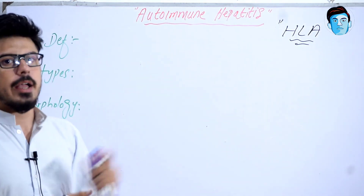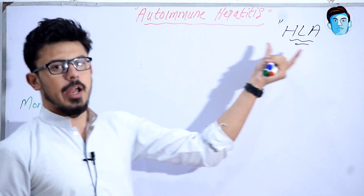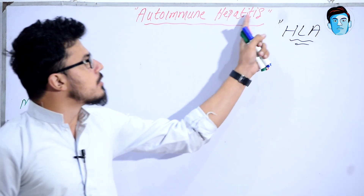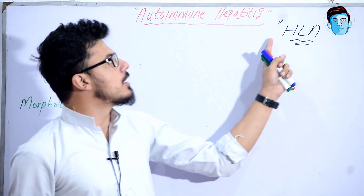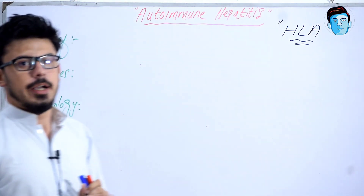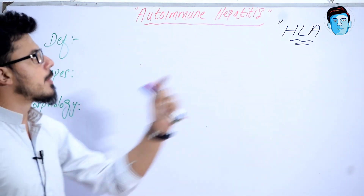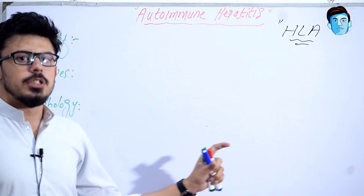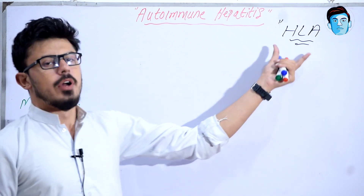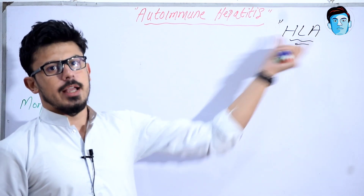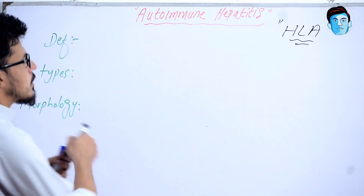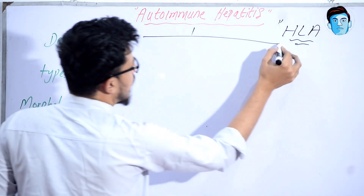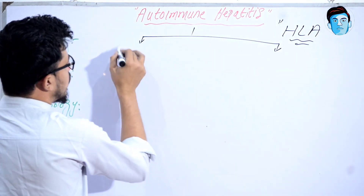So our body makes antibodies against those specific antigens — that is autoimmune hepatitis. It is most likely associated with the human leukocyte antigen, and mutation in HLA leads to the activation of antibodies against it. Autoimmune hepatitis is further classified into two types: Type 1 and Type 2.